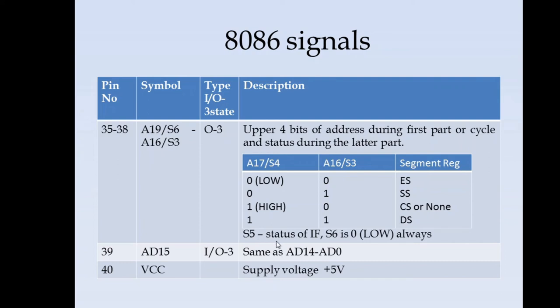Status S5 indicates the status of the interrupt flag. S6 is always zero. AD15 as pin number 39 is similar to any other address data line as we have seen in the earlier pins. And pin number 40 is the VCC which is supply voltage of 5 volts.